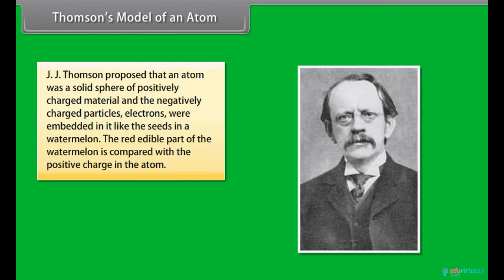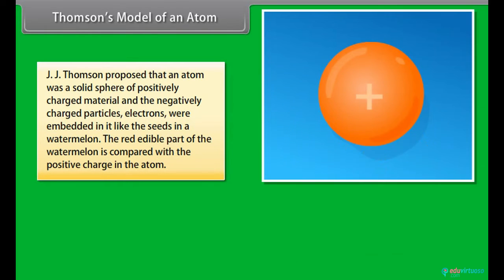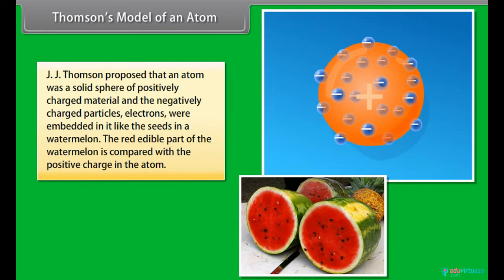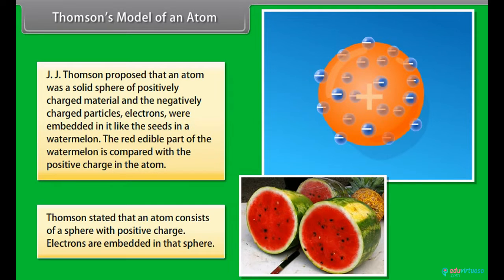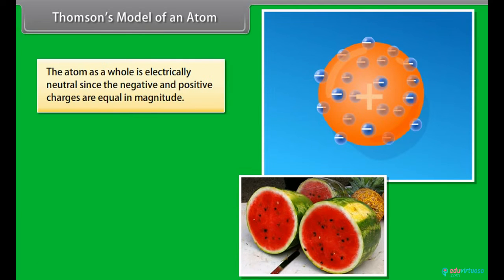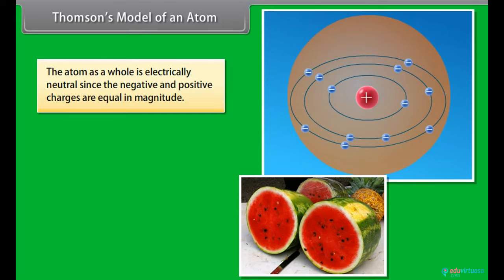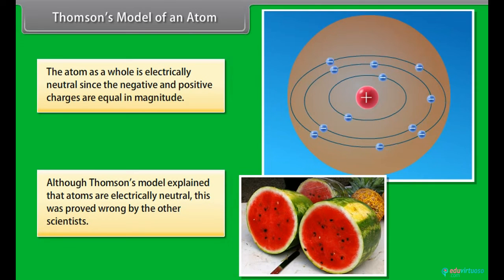Thomson's model of an atom: J.J. Thomson proposed that an atom was a solid sphere of positively charged material, and the negatively charged particles — electrons — were embedded in it like the seeds in a watermelon. The red edible part of the watermelon is compared with the positive charge in the atom. Thomson stated that an atom consists of a sphere with positive charge and electrons embedded in that sphere. The atom as a whole is electrically neutral since the negative and positive charges are equal in magnitude. Although Thomson's model explained that atoms are electrically neutral, this was proved wrong by other scientists.